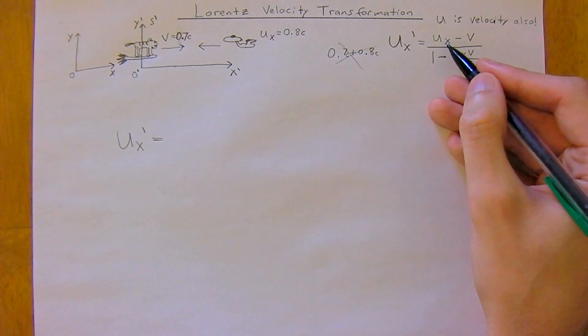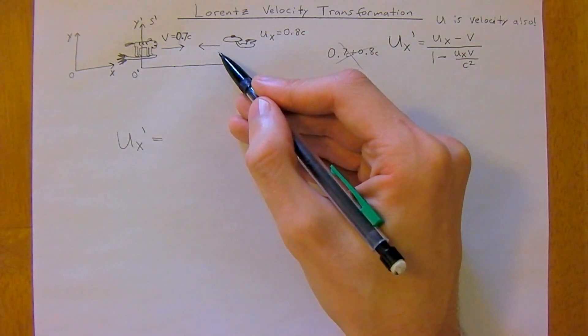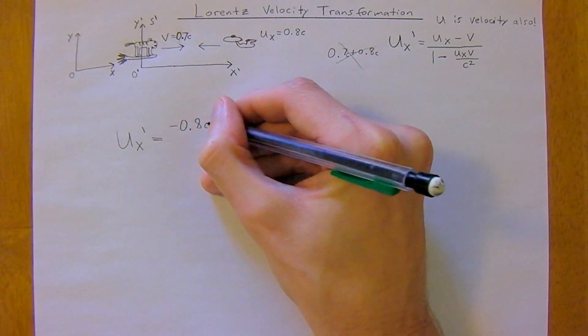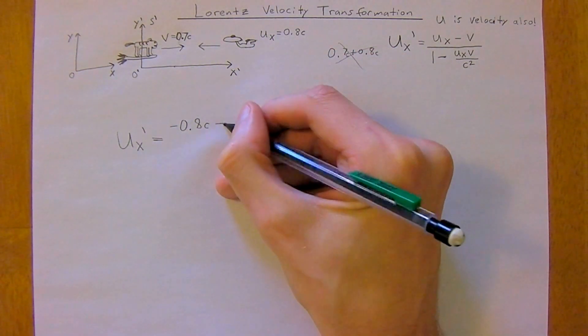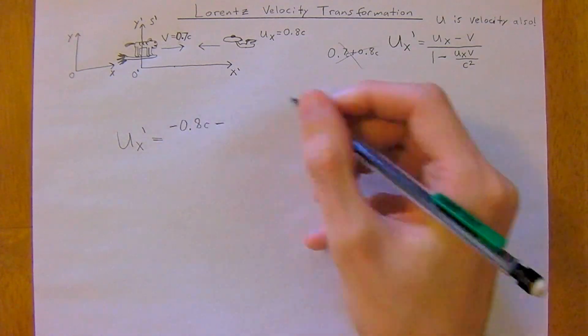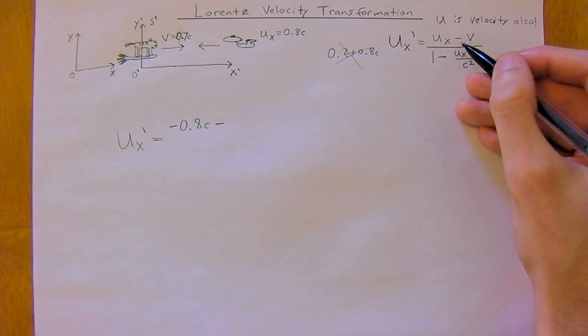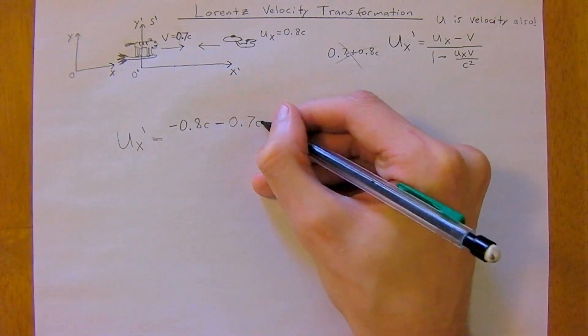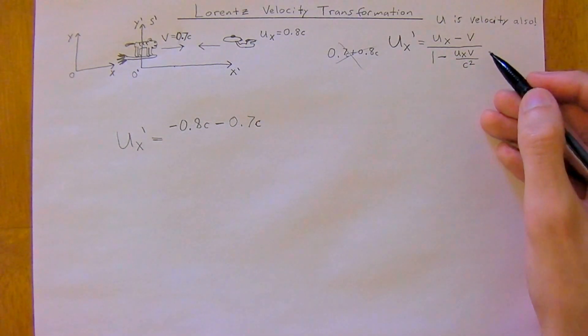The velocity that the cat sees the spaceship approaching will be equal to the velocity of the spaceship. Remember our convention that traveling left on the x-axis is negative, so it's negative 0.8C. If this spaceship were traveling right it would be positive. Then minus velocity—traveling right on the x-axis is positive, but this is part of the formula, so that's why we need the negative there—so 0.7C.